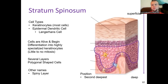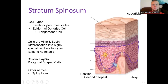The stratum spinosum is an oblong area of shaped cells — it looks almost like a spine. It contains keratinocytes and also immune cells such as Langerhans cells. These cells are still living but are not dividing; they are producing keratin protein. There are several layers of oblong polygonal shaped cells. It is the second deepest layer of the epidermis, also called the spiny layer.